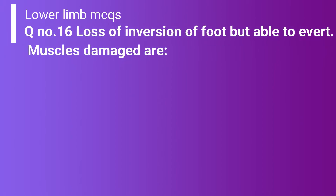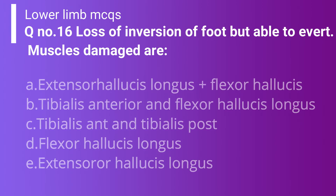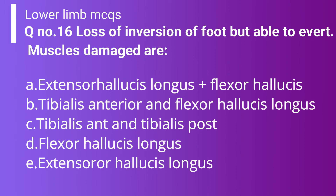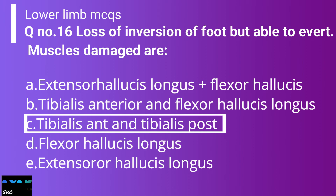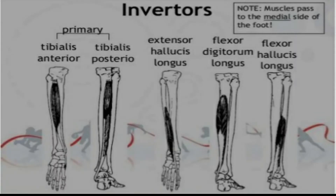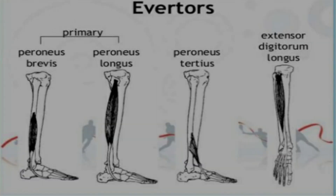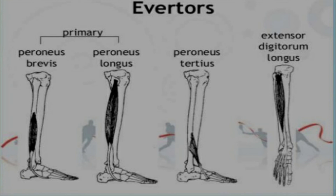Question number 16: Loss of inversion of foot but able to evert — which muscles are damaged? Option A: extensor hallucis longus and flexor hallucis. Option B: tibialis anterior and flexor hallucis longus. Option C: tibialis anterior and tibialis posterior. Option D: flexor hallucis longus. Option E: extensor hallucis longus. The correct answer is option C — tibialis anterior and tibialis posterior are the primary inverters of the foot. Option E is partially correct as a secondary inverter, but in the CPSP exam you must choose the best answer, which is option C.